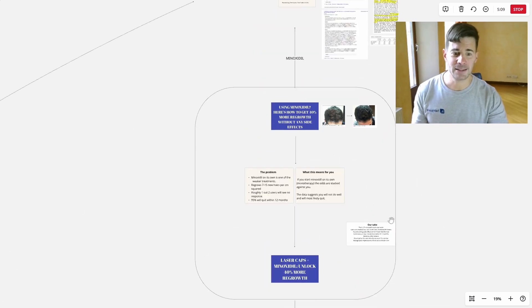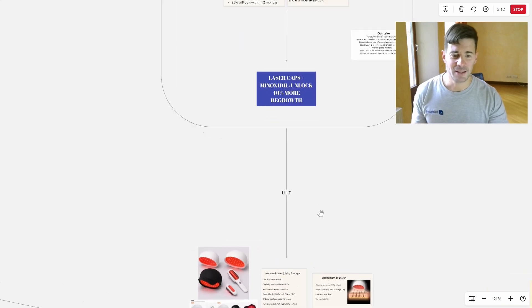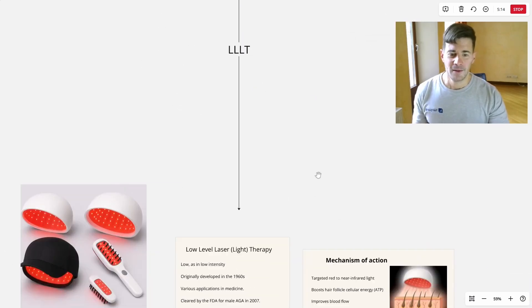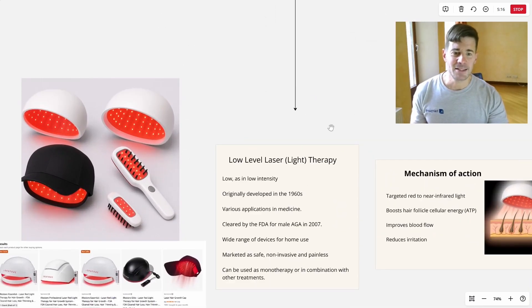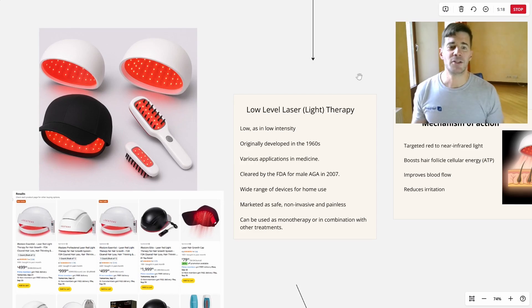And this is where the second arm of today's video comes in: LLLT. So let's have a look at LLLT. LLLT stands for low-level laser therapy. That was the original term. Now most people refer to it as low-level light therapy. And low means as in low intensity. So this isn't a very high-intensity light. It's a low-intensity light.